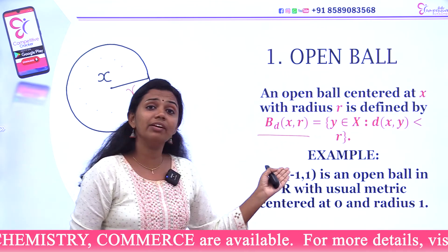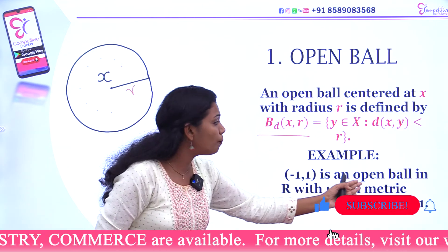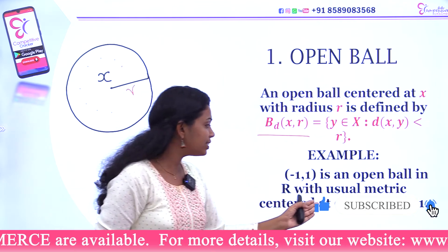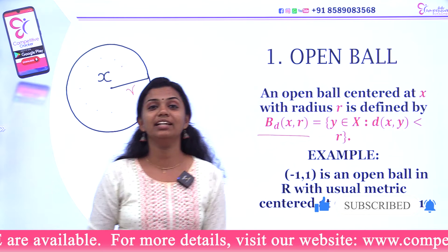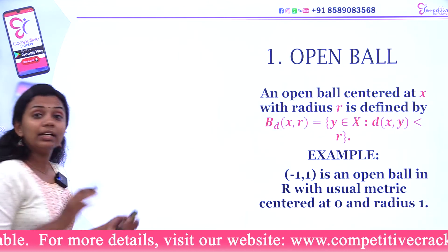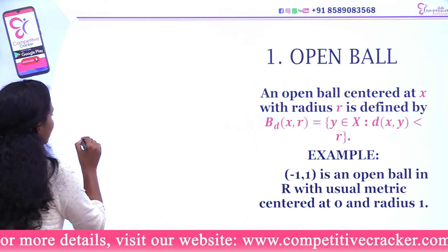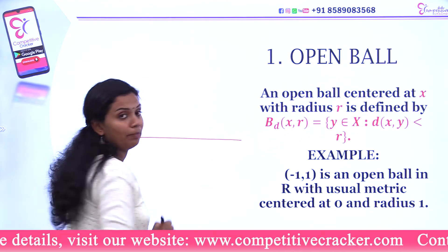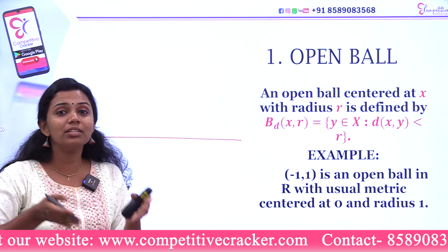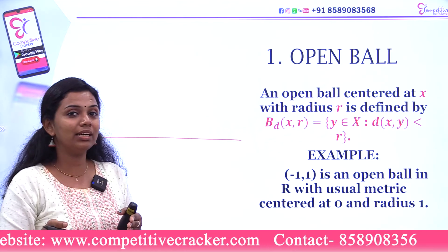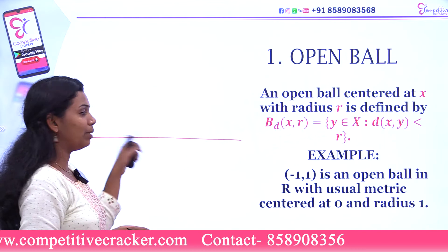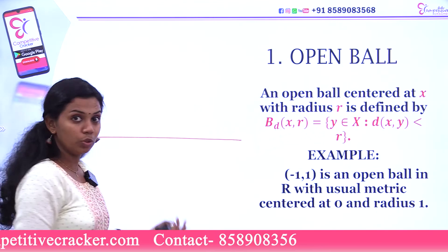One example: the open interval (-1, 1) is an open ball in ℝ with the usual metric, centered at 0 and radius 1. Now consider the real line with the usual metric. The usual metric distance is |x - y|.